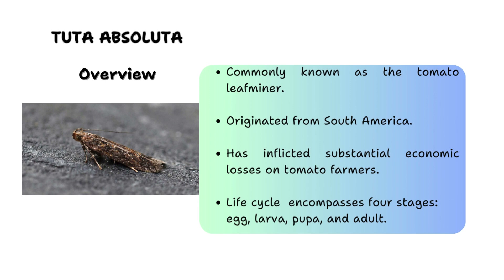The life cycle of Tuta absoluta consists of four main stages: the egg, the larva, the pupa, and the adult. However, it is the larval stage that is particularly destructive, as the larvae feed ferociously on tomato plants, causing extensive damage to leaves, stems, and fruits. This feeding behavior results in reduced yields and quality of tomato crops, making effective management strategies very crucial.